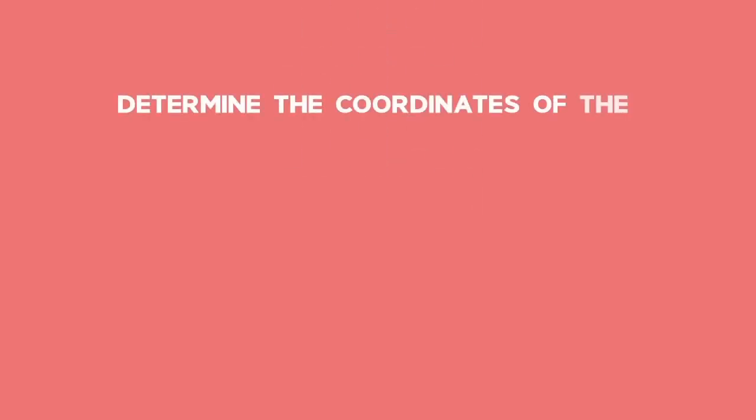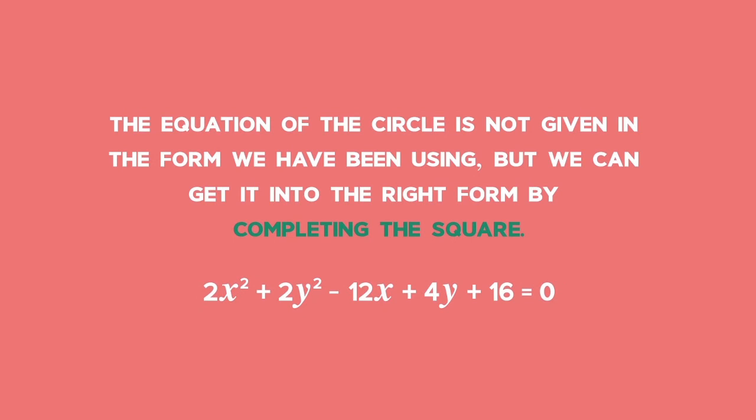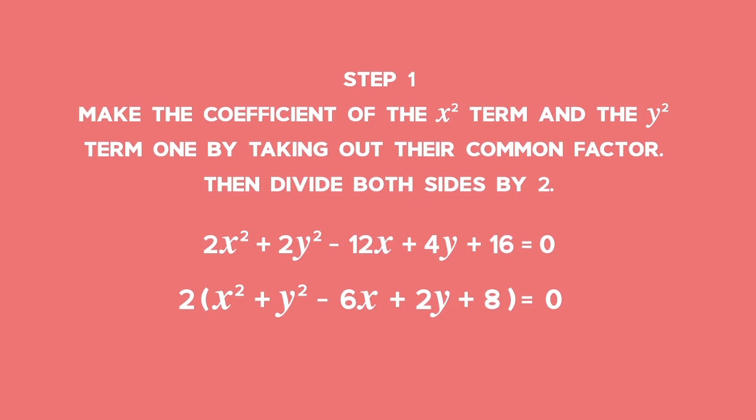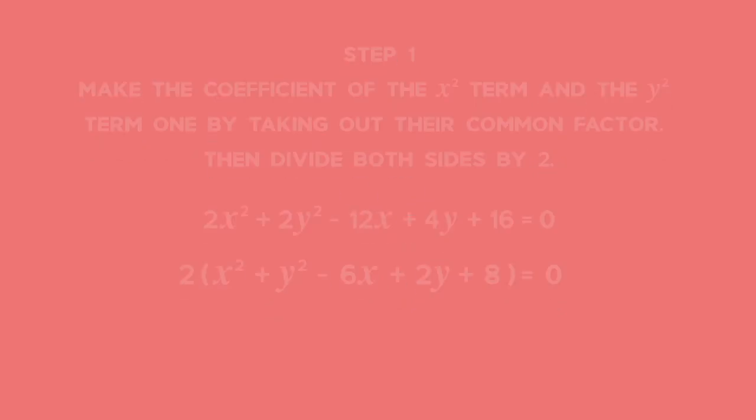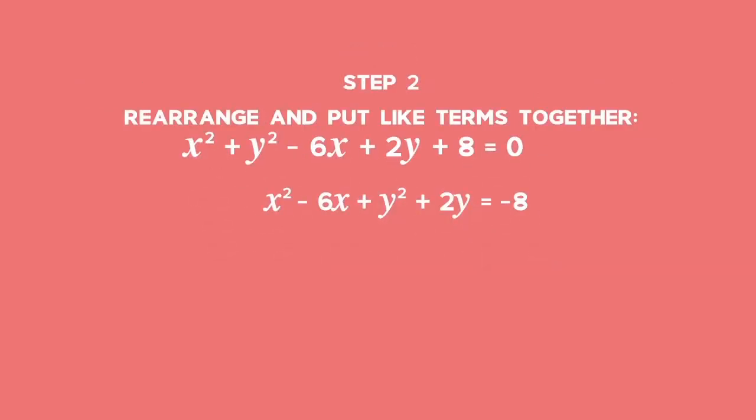Example 1. Determine the coordinates of the centre of the circle and the radius for this equation. The equation of the circle is not given in the form we have been using, but we can get it into the right form by completing the square. If we divide both sides of the equation by the common factor of the square terms, we can work with the equation more easily. Rearrange the terms and put like terms together.